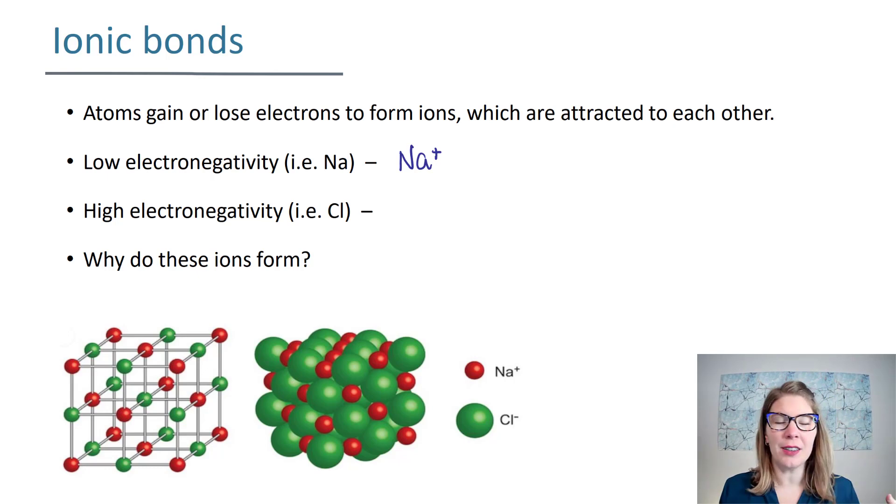They give up their electrons, they allow their electrons to be stolen from them. Whereas elements that have high values of electronegativity really have a desire to pull electrons toward themselves and so they will steal electrons from other atoms to create the negative ions.